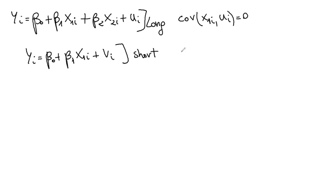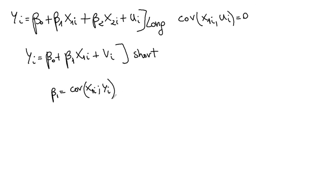The question we want to ask is: if we run the short regression, what is beta 1 estimating? To see what's going on, let's write down the formula for what beta 1 from the short regression is equal to. We know this from a bivariate regression — it's just the covariance between x1 and y, divided by the variance of x1. We'll label this one as the short regression and the other as the long regression.